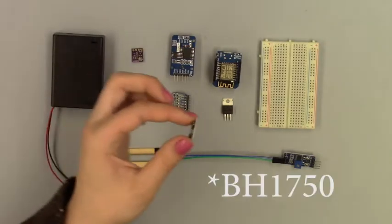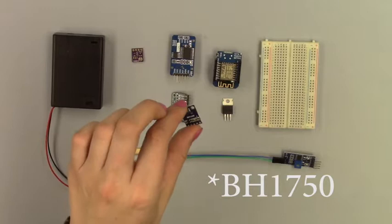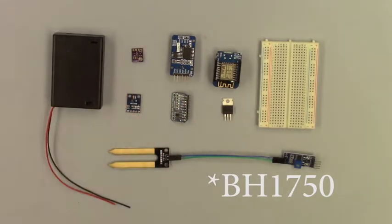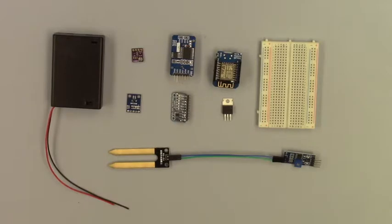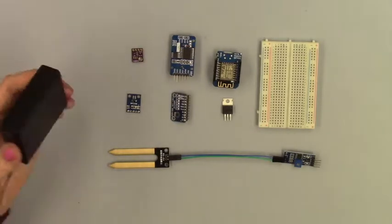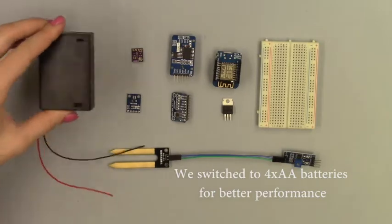This is the BH1750 light sensor, and this is the soil moisture sensor. The batteries for the unit are housed in this battery case. Here we have a case that can hold three standard AA batteries.